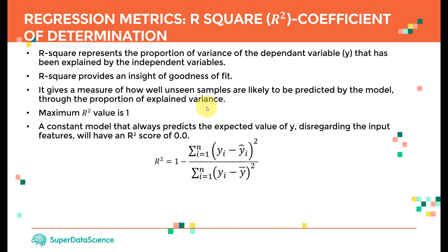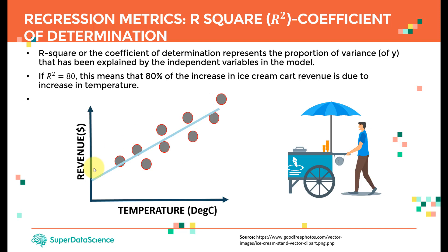Going back to our temperature-revenue example: if R-square equals 80, that means 80% of any increase in revenue is due to the increase in temperature.